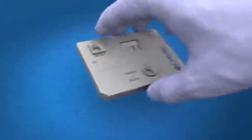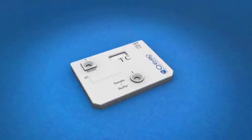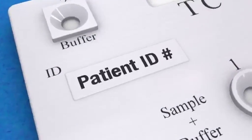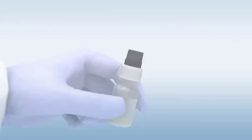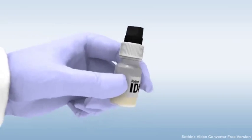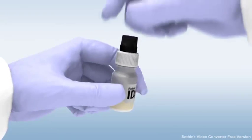Remove the DPP test device from the foil pouch and place it on a flat surface. Label the device with the patient identification number. Label the black cap sample tainer with the patient ID number. Then remove the top by unscrewing the white cap from the bottle.